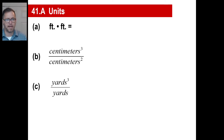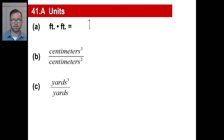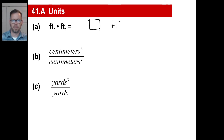A foot times a foot is called a what? Here's something that's a foot long. Now it's a foot long by a foot wide. What is this called right here? It's a square foot, right? And it's abbreviated like that. The two means two dimensions.